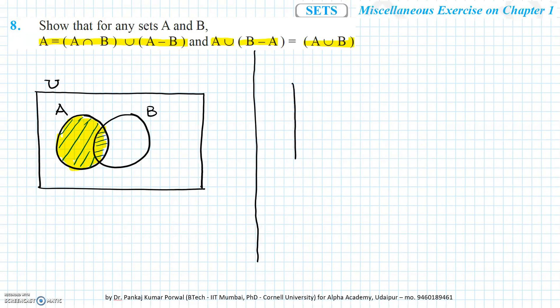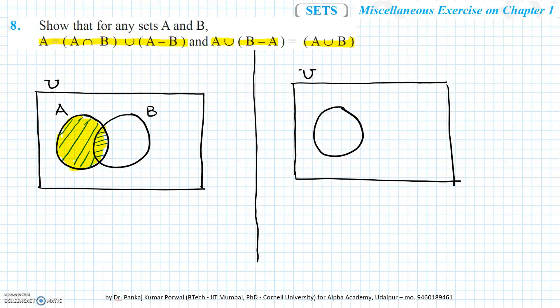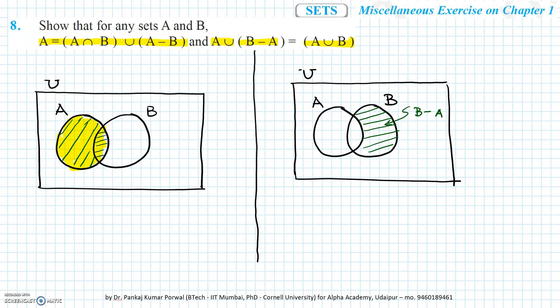For the second part, A union B minus A: B minus A is the part of B left after subtracting the common part of A and B. If we take the union of B minus A with A, we get the complete A union B. So A union B minus A equals A union B.